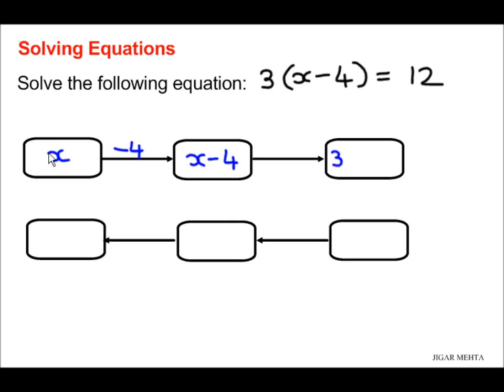Next I need to get 3 times x minus 4, so I need to multiply x minus 4 by 3. This completes the left hand side of the equation.